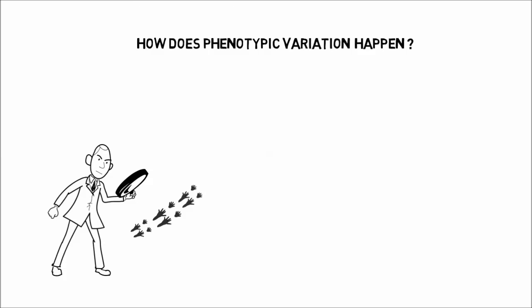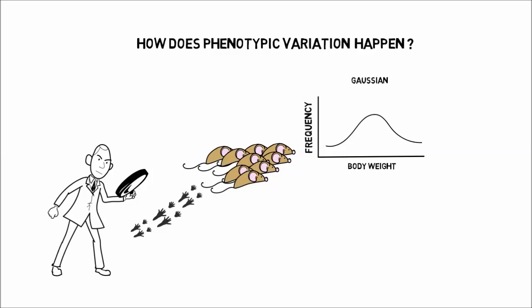Tracking lots of mice, we noticed that their body weight distributions weren't normal or Gaussian, they actually had a second bump.